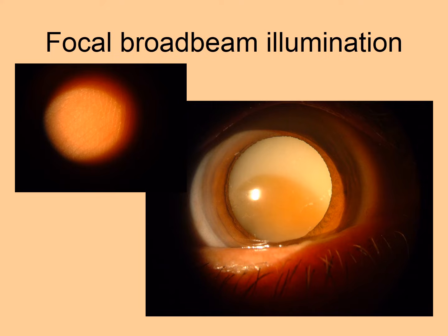The next type of illumination on the slit lamp is focal broad beam illumination, the illumination most commonly used to see an overview of the eye. Since it is a focal illumination, the focus can be shifted progressively more posterior into the eye, up to the anterior vitreous, and details of the area where the broad beam is focused can be visualized. Here you see a Morgagnian cataract with the nucleus sunken in the liquefied cortex, and details of the nucleus within the lens can be better seen because of the focality of the broad beam.